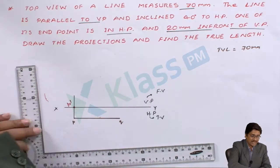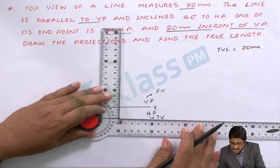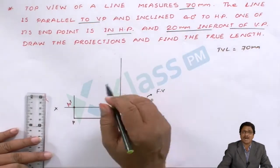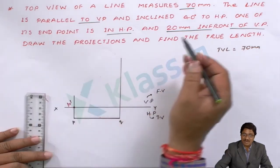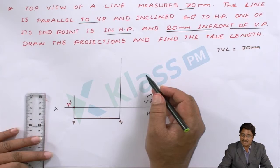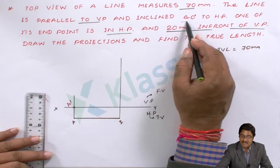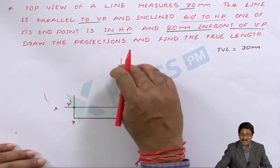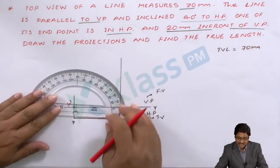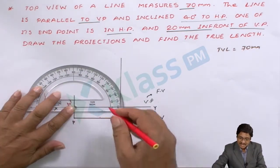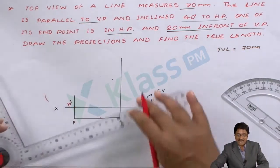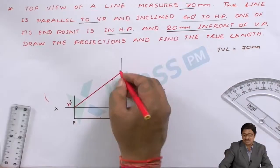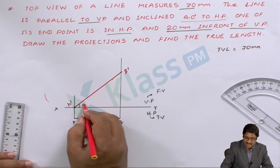Now we need to locate Q'. We know Q' must lie on the vertical projector from Q — that is the fundamental concept. But where exactly on that line? We use the remaining condition: the line is inclined at 40 degrees to HP. The front view gives details of HP inclination. So from P', the front view line must make 40 degrees with the XY line. Take a protractor, align it at P', mark the 40-degree direction, then draw a line from P' until it meets the projector from Q. That intersection is Q'.